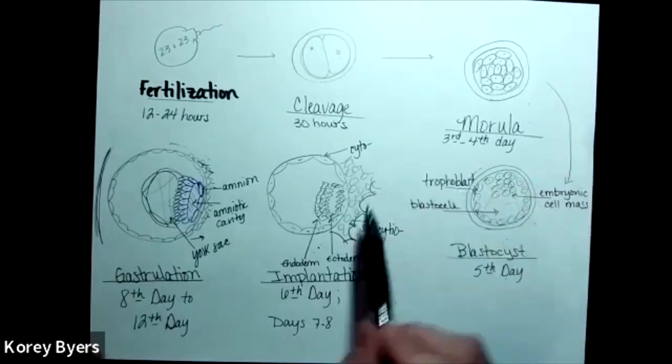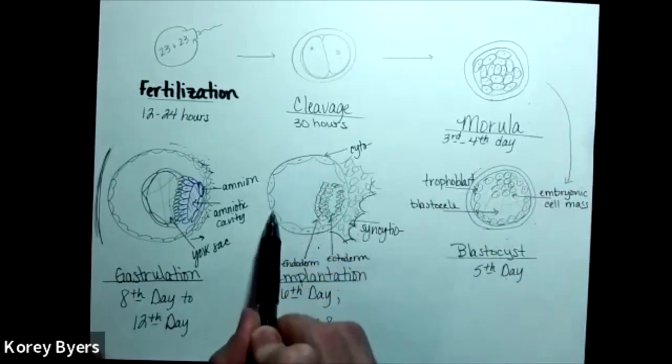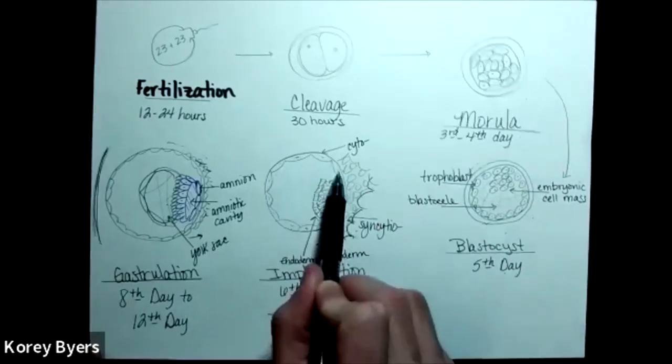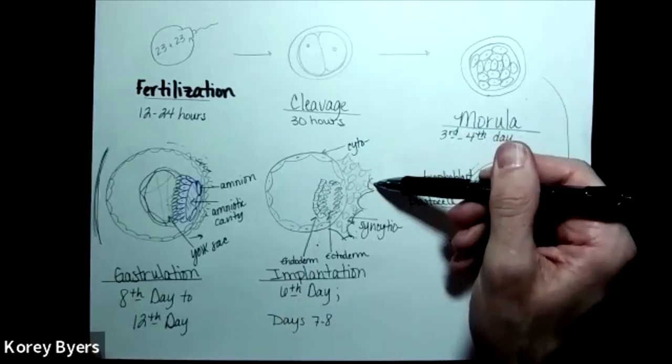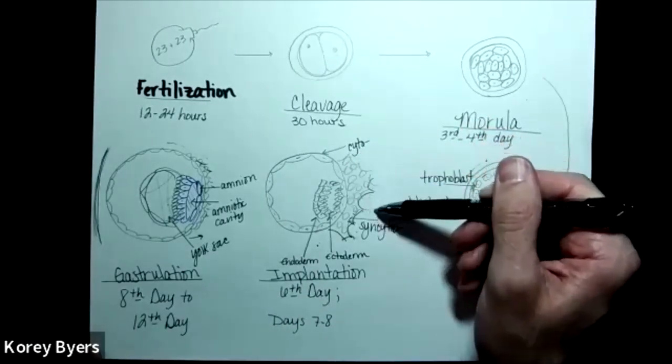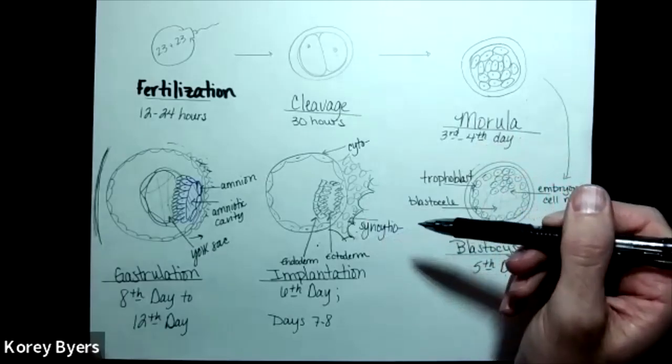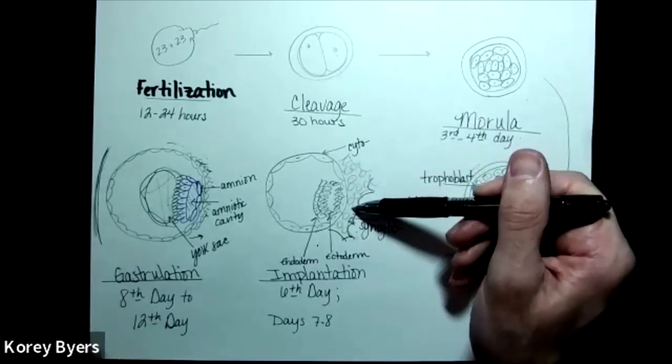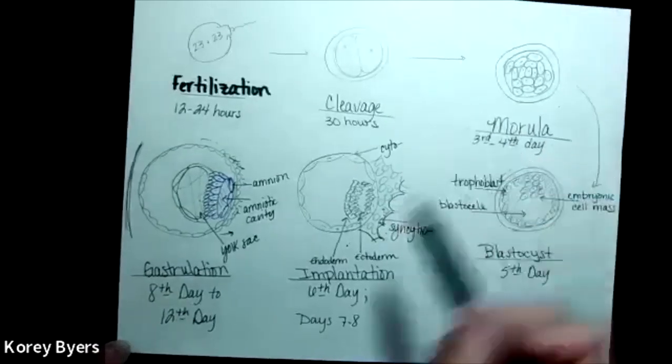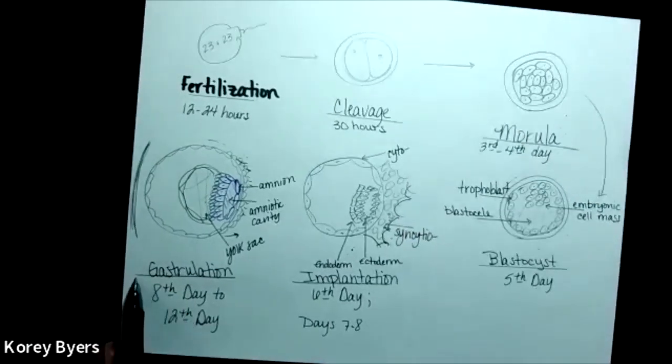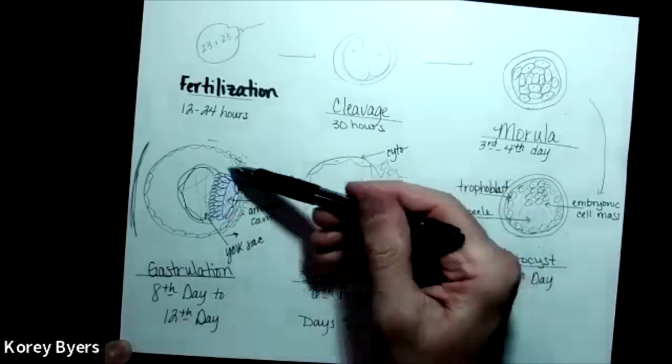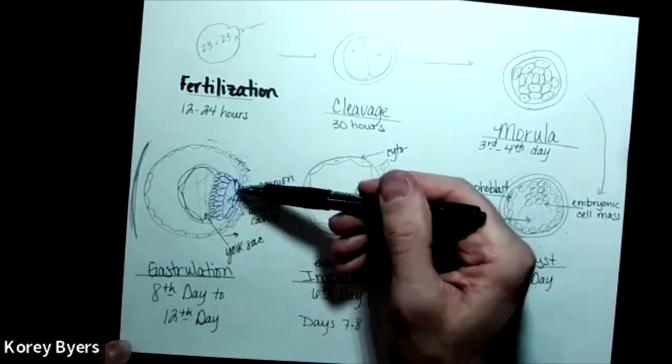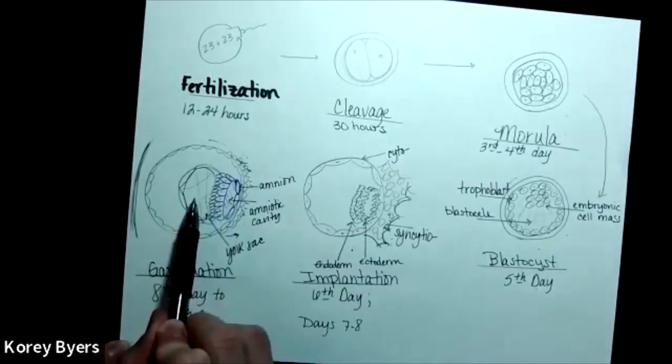Here, that trophoblast is going to form the cytotrophoblast, or the cell trophoblast, and the syncytial trophoblast, which makes its way into the endometrial lining or forms the embryonic side of what will be the placenta. Days eight through twelve is when I said gastrulation is going to occur. We begin to see the formation of that embryonic cell disc, what we call the amnion and the yolk sac.